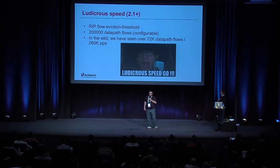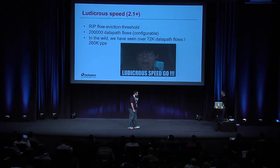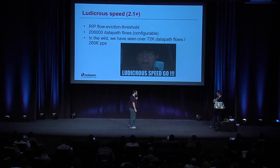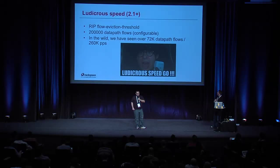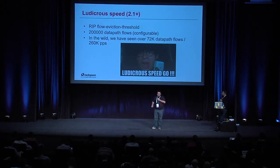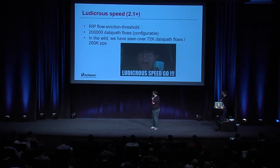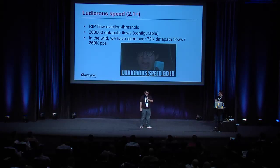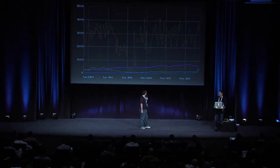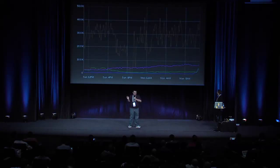Then we have ludicrous speed. They did away with the flow eviction threshold completely with 2.1 and beyond. Instead of a 2,000 datapath flow limit, there are 200,000 datapath flows by default out of the gate with OVS 2.1 and beyond — a configurable value. For what we see with public cloud, we've seen over 72,000 datapath flows with some workloads doing 260,000 packets per second. That's a significant improvement. This chart of the top five datapath flows post-2.1 shows most workloads are towards the bottom, but we've got one customer out of control in the 40,000 datapath flow range.